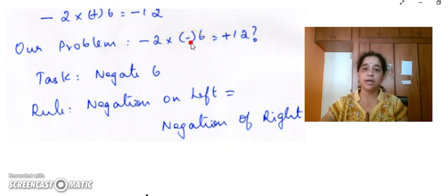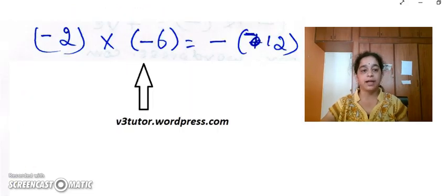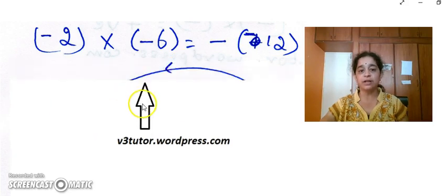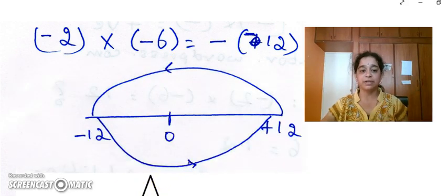So when we negate minus 6, we have to negate minus 12 also. When we negate this minus 6, we have to negate minus 12. And when we negate minus 12, it goes on the other side of the number line. We have just seen in the case of 1.